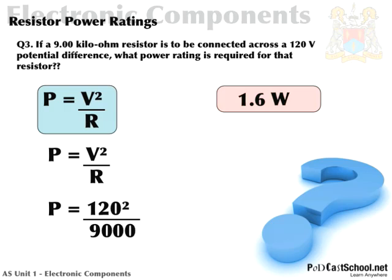Another question: if a 9 kilohm resistor is connected across a 120-volt potential difference, what power rating is required? We have R and V, so use P equals V²/R. Plugging in: 120 squared divided by 9,000 gives 1.6 watts. Always remember your units — never write just 1.6, it's always 1.6 watts.